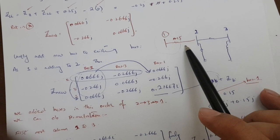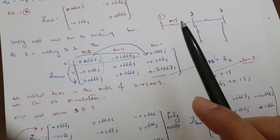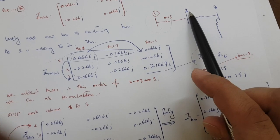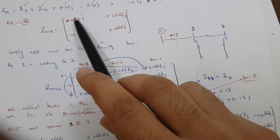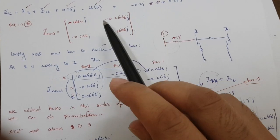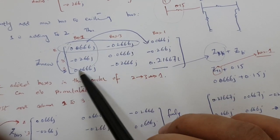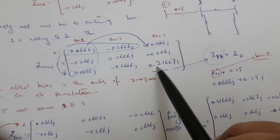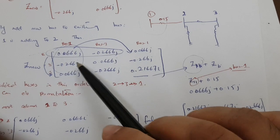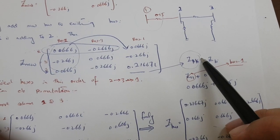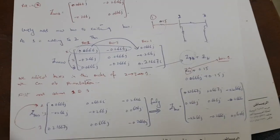The last portion is adding bus one to an existing bus, which is the simple step two case. Bus one is connected to bus two, so the Z_11 matrix entry uses the row and column corresponding to bus two. Here Z-kk is 0.0666j, and Z-b (the new reactance) is 0.15j, giving Z-bus new diagonal entry of 0.21667j. This is our final answer.